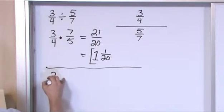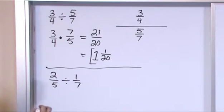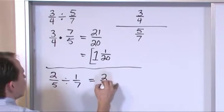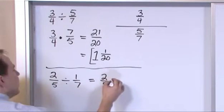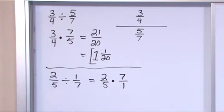What if you have 2 fifths divided by 1 seventh? All you do is you rewrite it, so you'll just say, put an equal sign, 2 fifths, change this division into a multiplication, turn the second fraction over, 7, 1, 7 over 1.